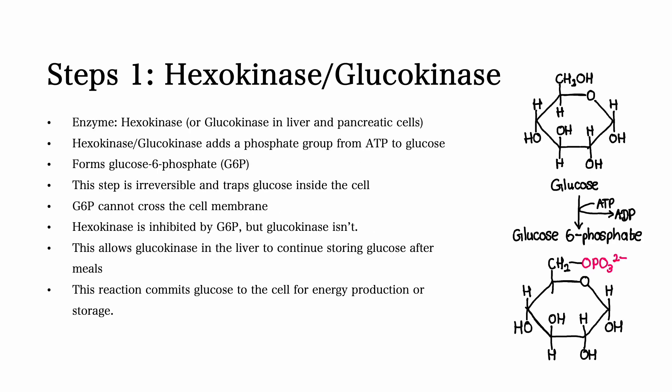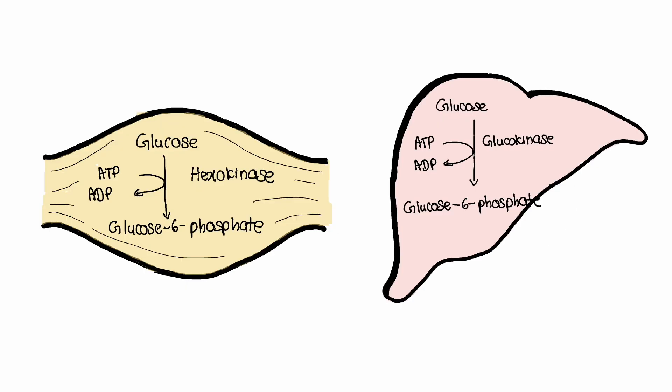Step number one. In this step, the enzyme hexokinase, or glucokinase in liver and pancreatic cells, adds a phosphate group from ATP to glucose. This forms glucose 6-phosphate, also known as G6P. This step is irreversible and traps glucose inside the cell, as G6P cannot cross the cell membrane. Hexokinase is inhibited by G6P, but glucokinase is not.